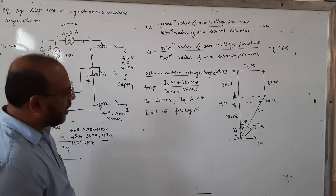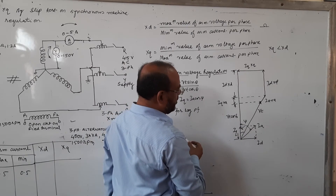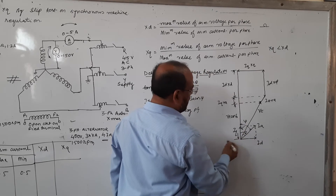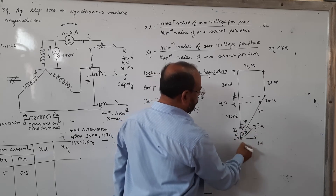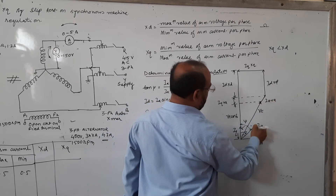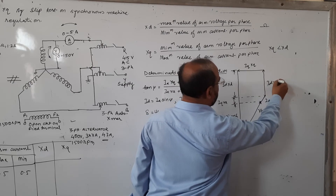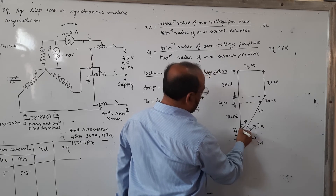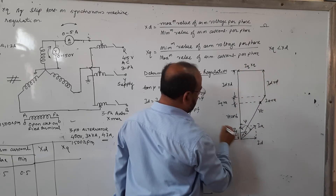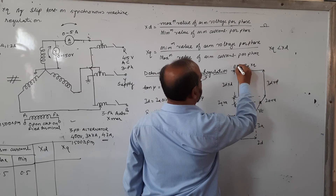Now, how to calculate the voltage regulation for the salient pole synchronous machine. This is the vector diagram of the salient pole synchronous alternator, where the current is lagging at an angle theta with respect to terminal voltage. The internal power factor angle is psi. It has two components: the direct axis component and the quadrature axis component. The armature resistance drop is in phase with the armature current. The direct axis reactance drop is Id·Xd and the quadrature axis reactance drop is Iq·Xq.